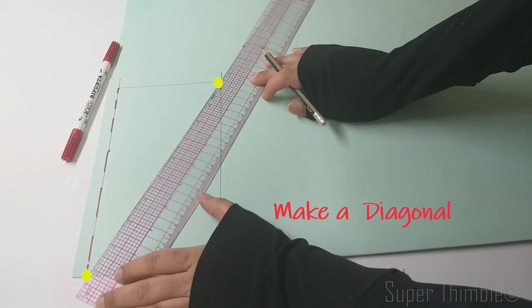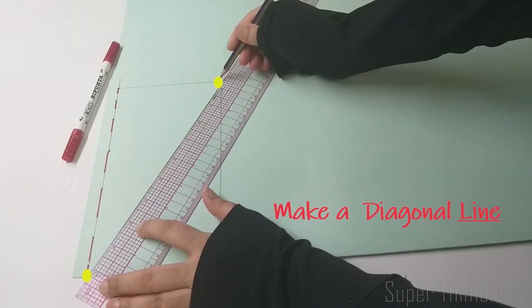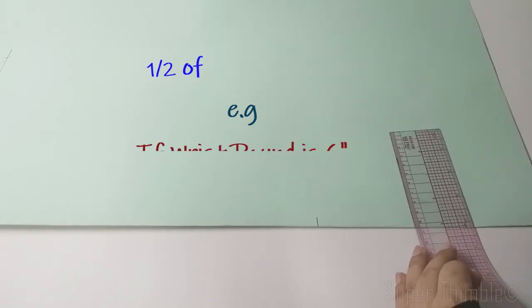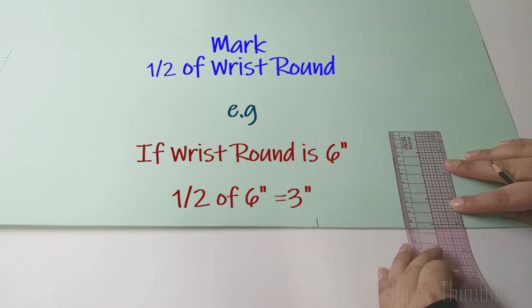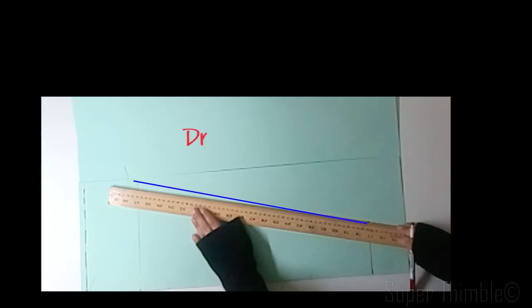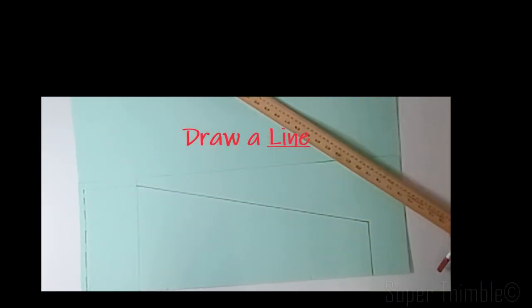Make a diagonal line starting from up guideline on the fold side. Measure half of wrist round on the hemline of the sleeve length. Let's assume the wrist round is 6 inch. Make a line.